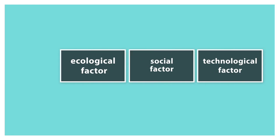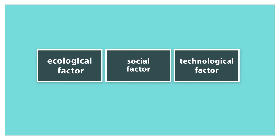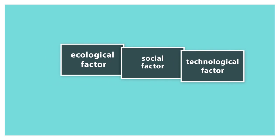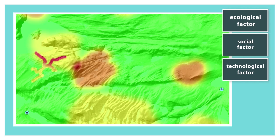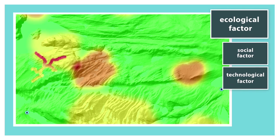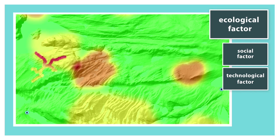The different factors are assigned a number value relative to their importance and are then plotted on a map. On this map, for example, you can see how the factors of ecological importance are distributed in the landscape. In the red areas there are many ecological concerns, whereas in the green areas there are few.